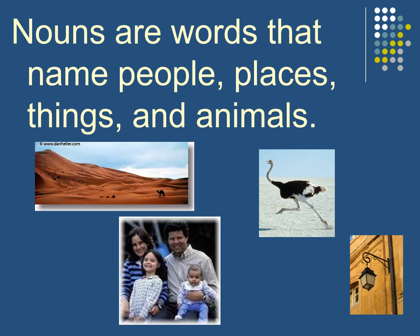For example, the word family is a noun. Desert is a noun. Ostrich is a noun. Bird is a noun. Lamb is a noun — things that I can see and touch.